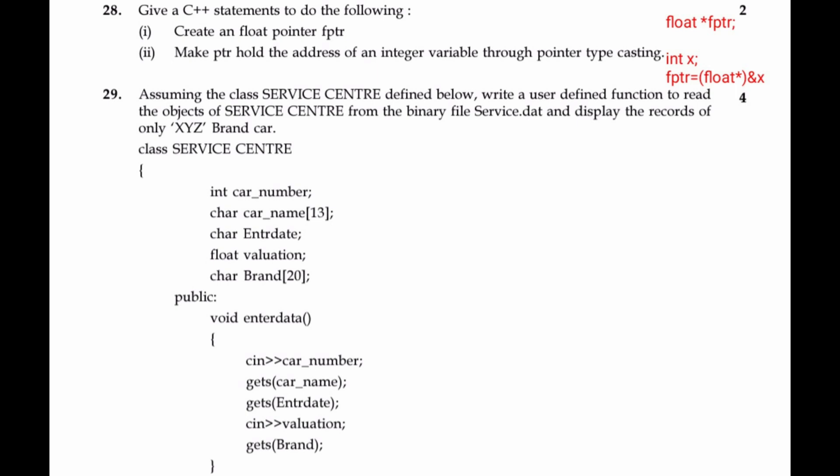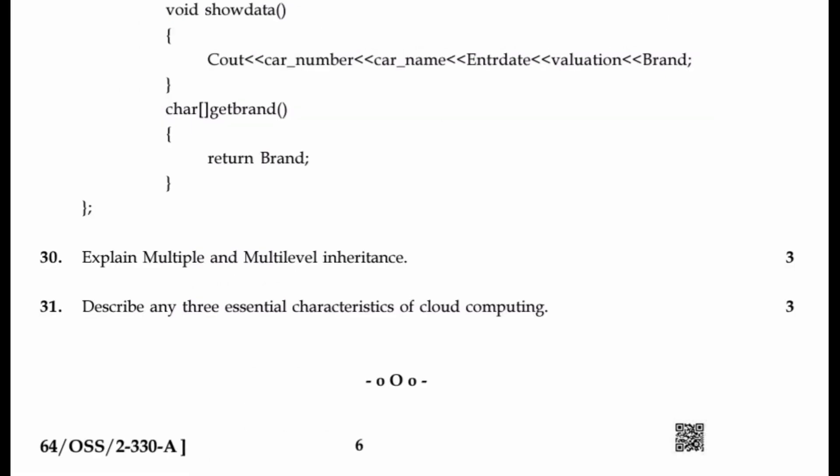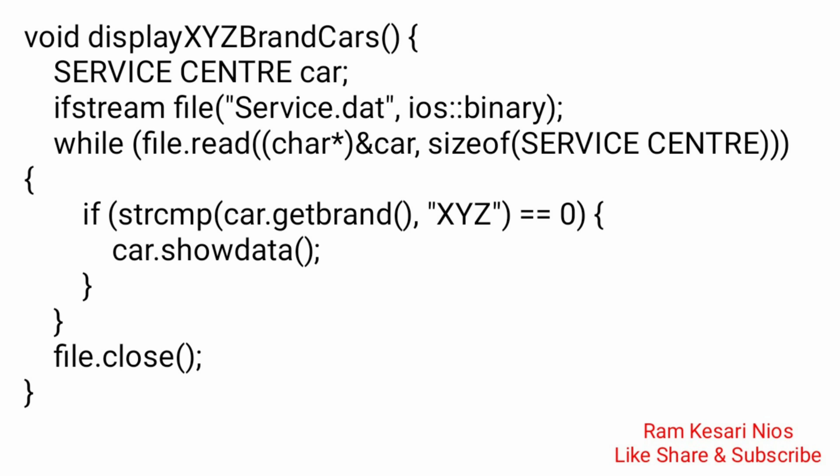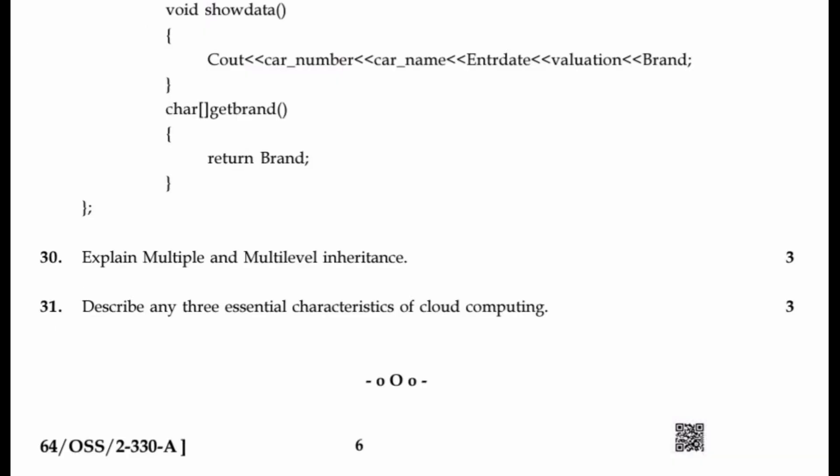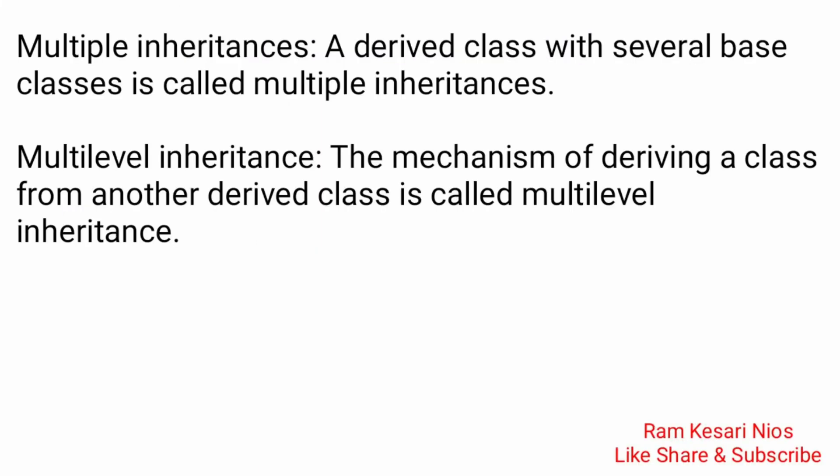Question 29: Assuming the class service_center defined below, write a user-defined function to read the objects of service_center from the binary file service.dat and display the records of only X, Y, Z brand cars. Pause the video and see the answer. Question 30: Explain multiple and multi-level inheritance. Multiple inheritance: a derived class with several base classes is called multiple inheritance. Multi-level inheritance: the mechanism of deriving a class from another derived class is called multi-level inheritance.